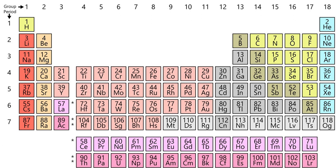The distinction between categories is not absolute. Boundary overlaps, including with the metalloids, occur as outlying elements in each category show, or begin to show, less distinct, hybrid-like or atypical properties.